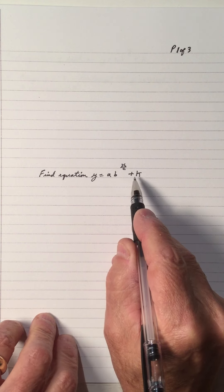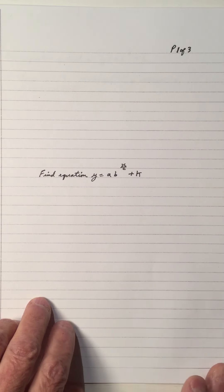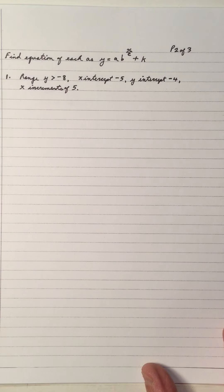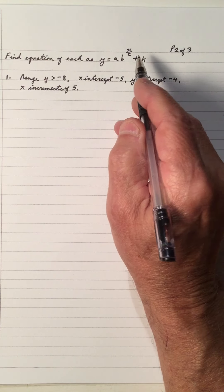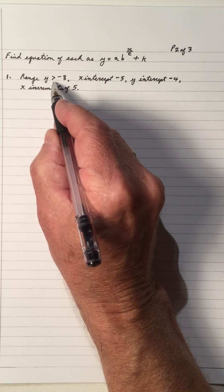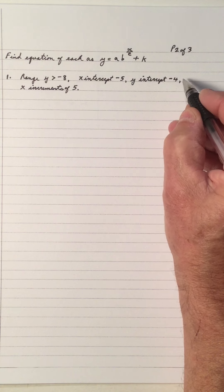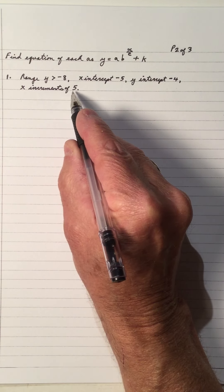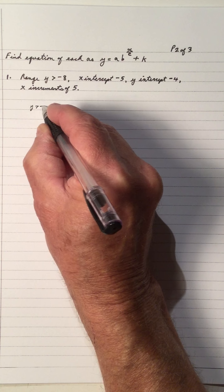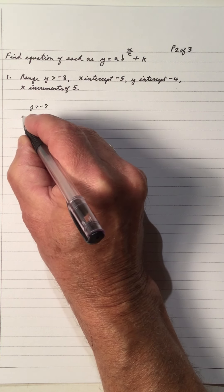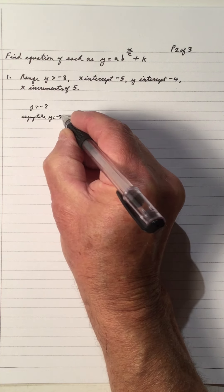This video is looking for the equation when we have an asymptote given to us, and the asymptote is the k. Find the equation of each as y equals a times b to the x over c, plus k. Number one: the range is y is greater than negative eight, the x-intercept is negative five, the y-intercept is negative four, and we have x increments of five. If the range is y is greater than negative eight, that means the asymptote is y equals negative eight.